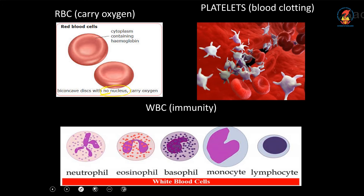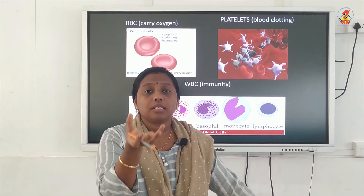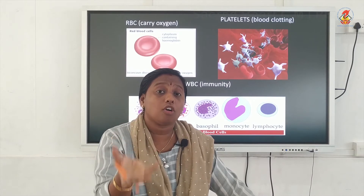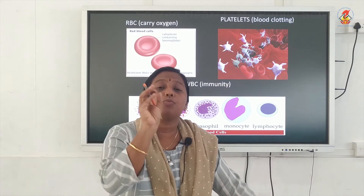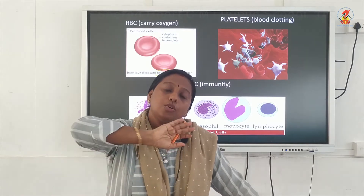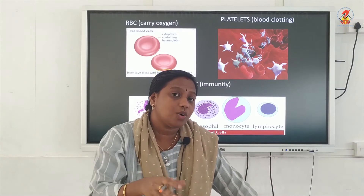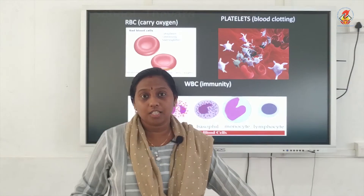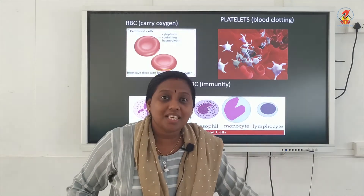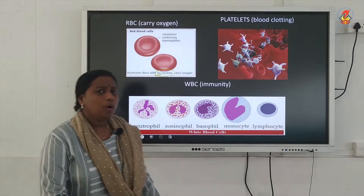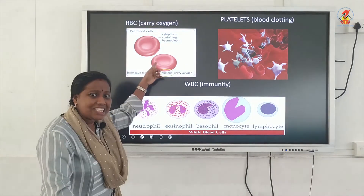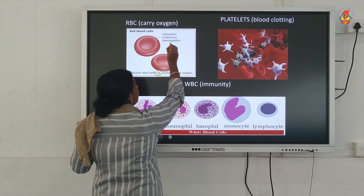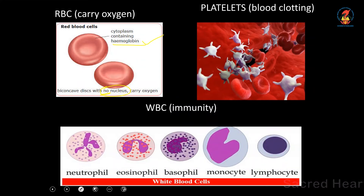The nucleus would take up space in the RBC, reducing the capacity to carry oxygen. To increase the efficiency of oxygen transport, the RBC has no nucleus — so that in that space, more oxygen can be carried. The RBC is red in colour because of the presence of a pigment called hemoglobin. Hemoglobin — 'heme' means iron, so it is an iron-containing compound. This iron-containing compound gives red colour to blood.